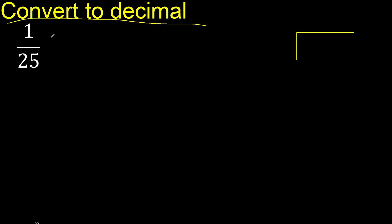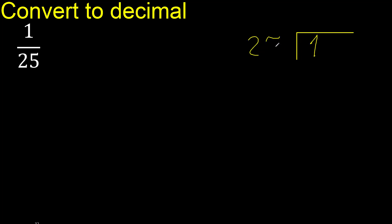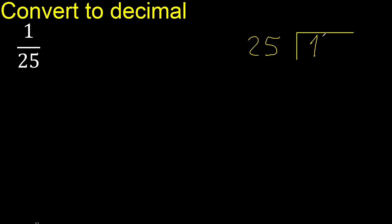1 divided by 25. Since 1 is less than 25, complete with 0, and write 0 point.